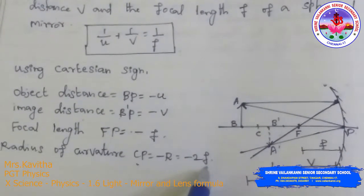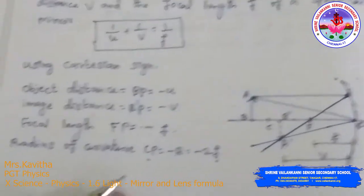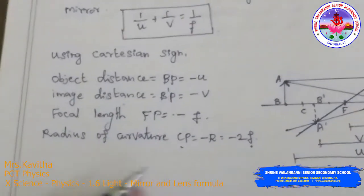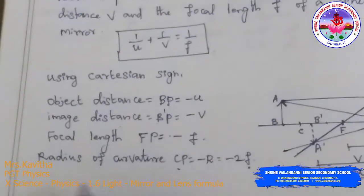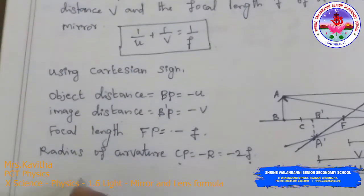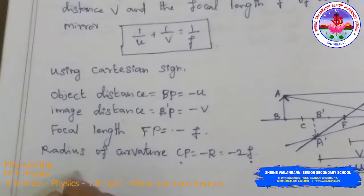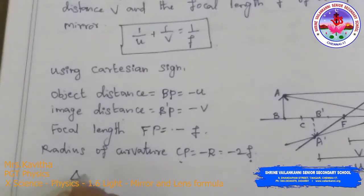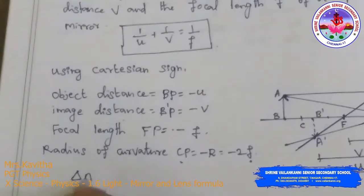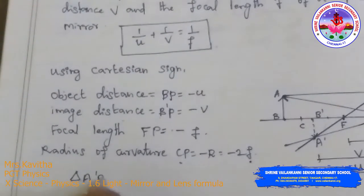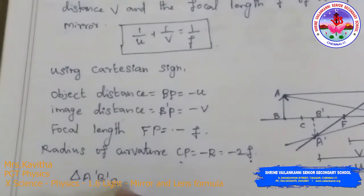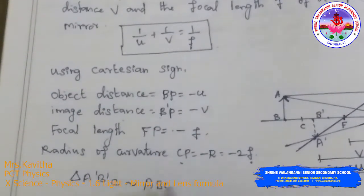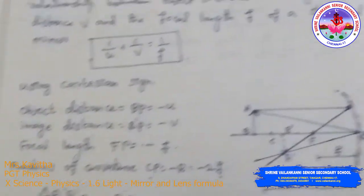Now we are going to consider two triangles: triangle A'B'C and triangle ABC, to derive the formula.